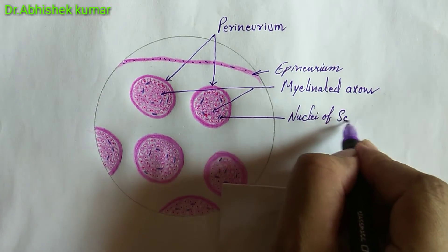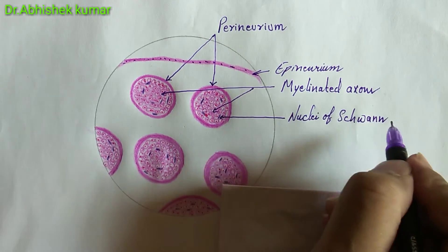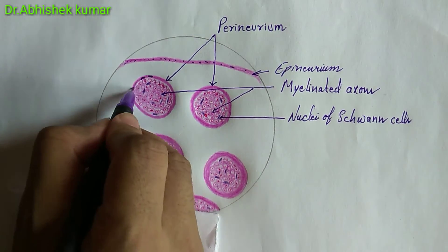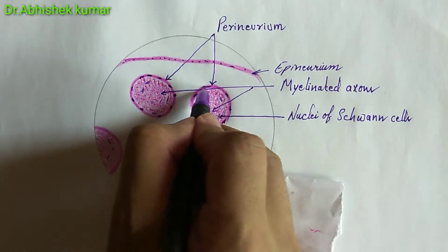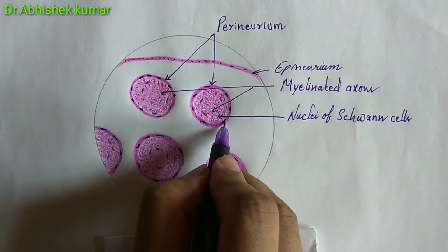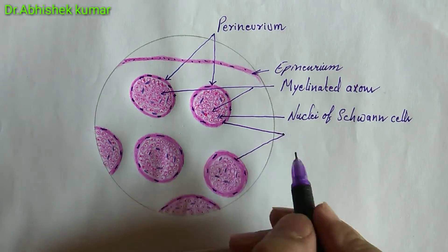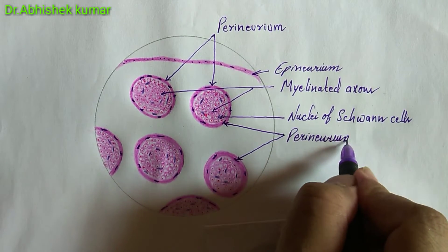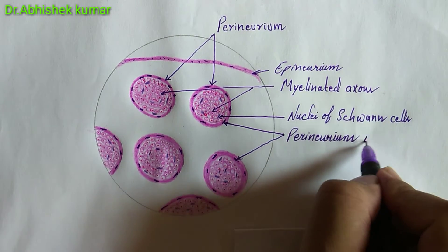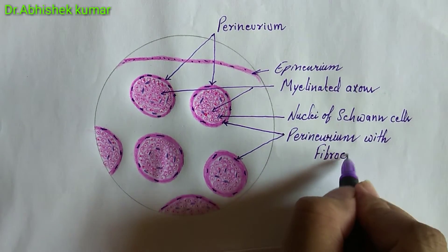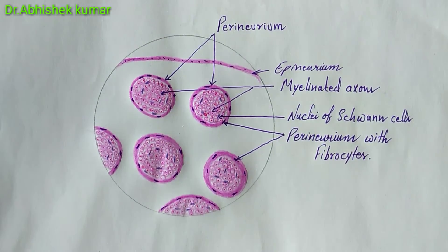The nuclei of Schwann cells are visible, though the cell membrane of Schwann cells is not always distinguishable from the connective tissue of the endoneurium that surrounds each of the axons. Here we can also see fibrocyte cells present in the perineurium. We note the perineurium with fibrocyte cells present.